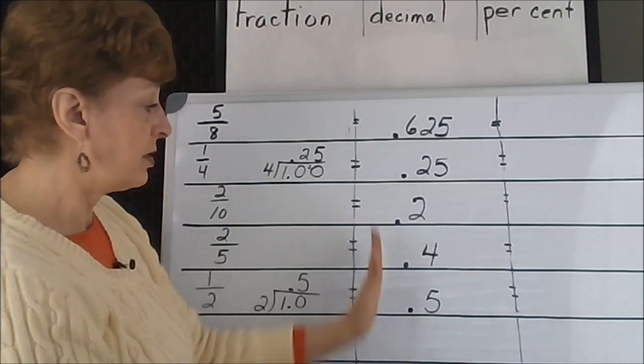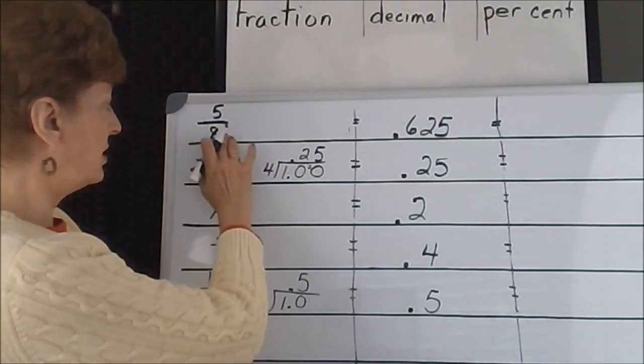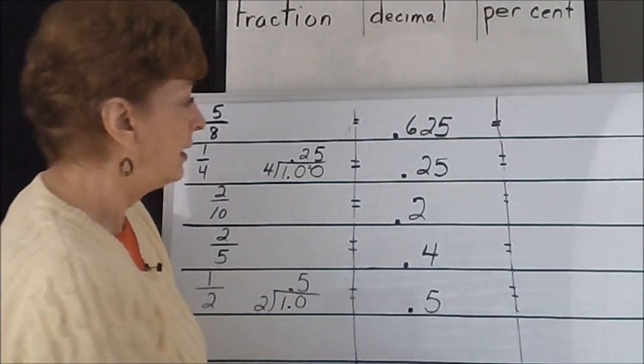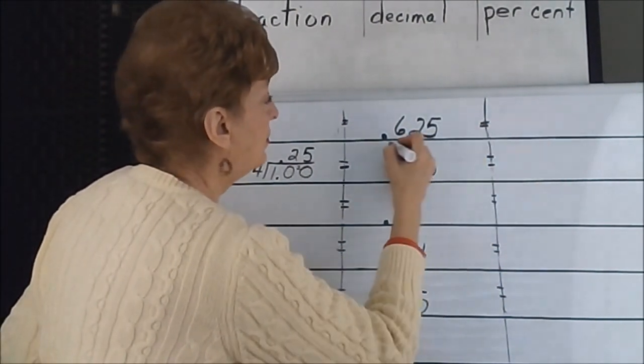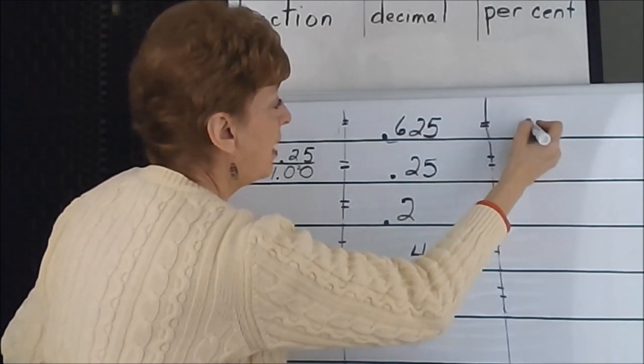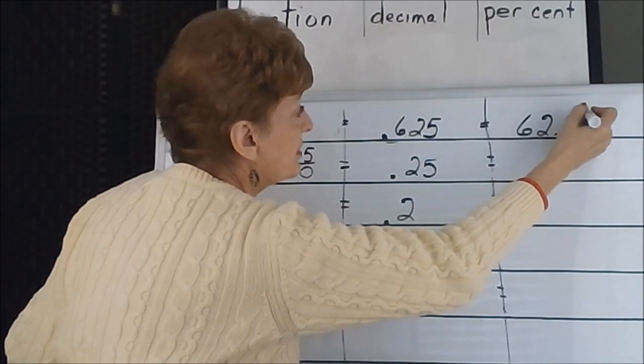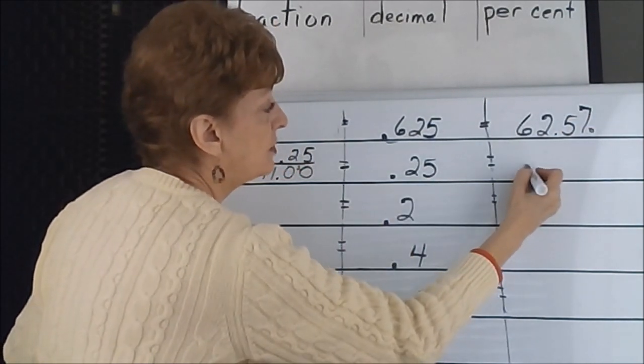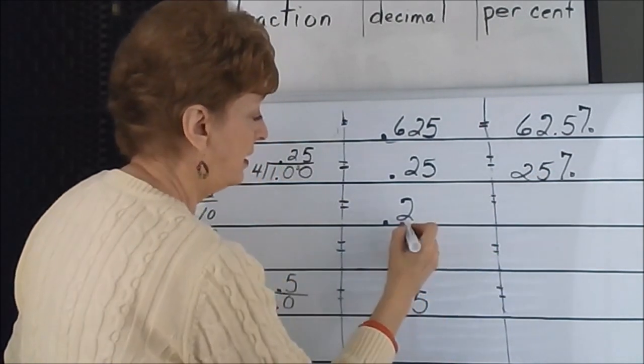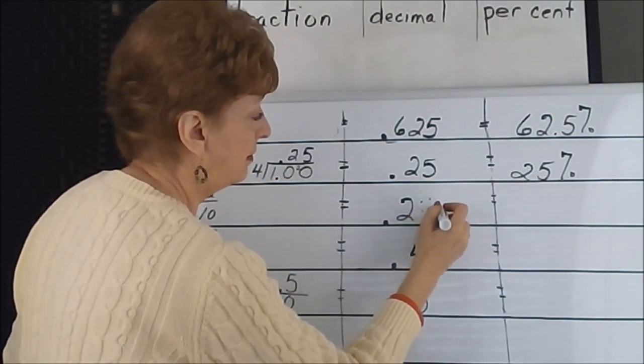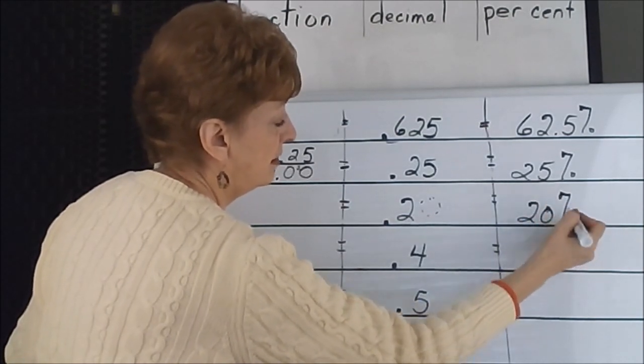Now we have all our decimal equivalents because we divided our fractions, the denominator into the numerator. Now we can do our percentages. 2 places to the right: 62.5%, 25%, 25%, 25% - this one needs a 0 on it, 20%, 50%.